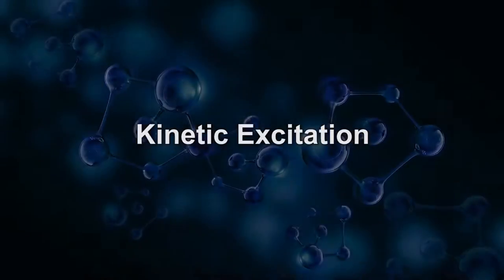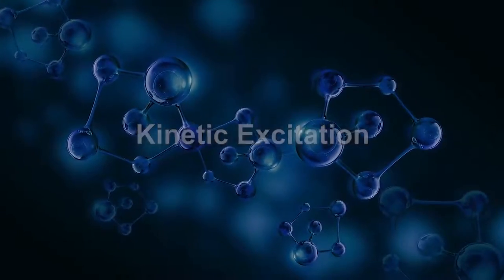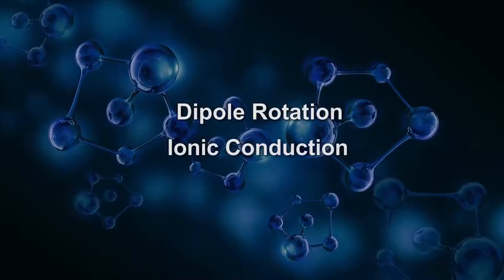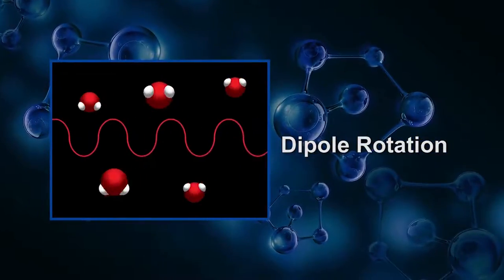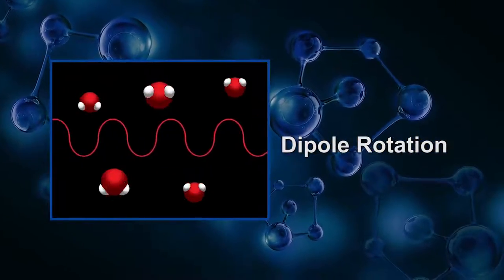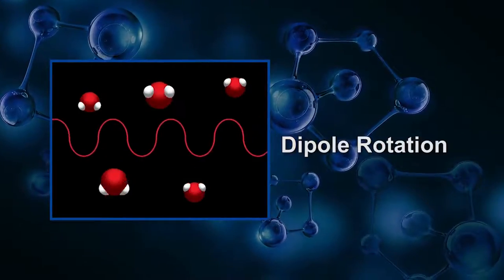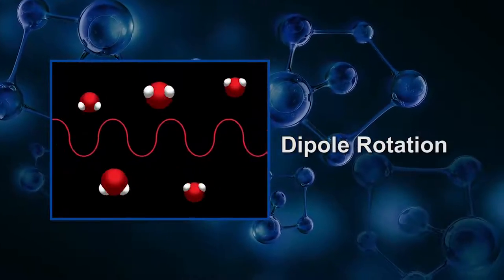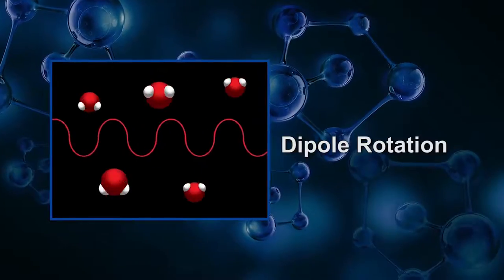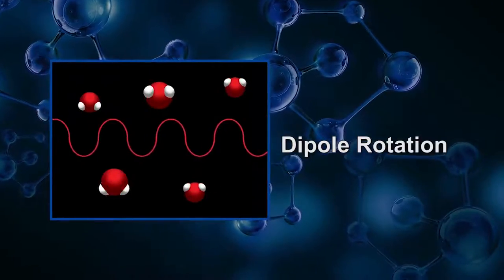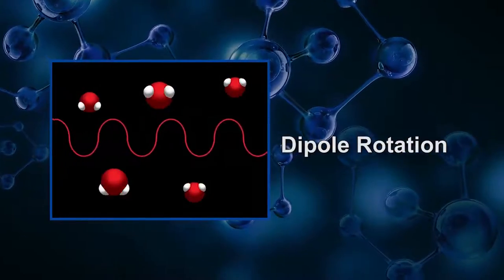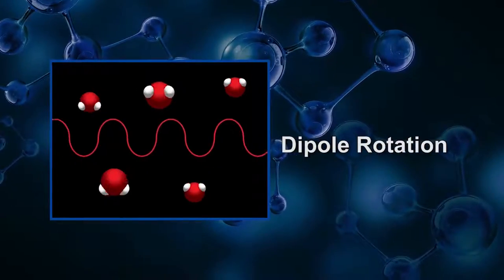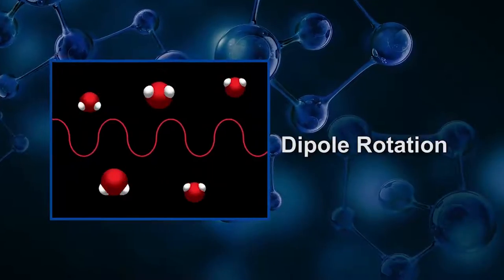This kinetic excitation takes place through two primary forms of energy transfer: dipole rotation and ionic conduction. The animation shown here represents water molecules being heated by microwave energy. Since water molecules possess a dipole, they try to align with the rapidly changing amplitude of the electric field as it passes through them. This rotational motion or dipole rotation of the molecule as it tries to orient itself with the field results in heating through molecular friction.